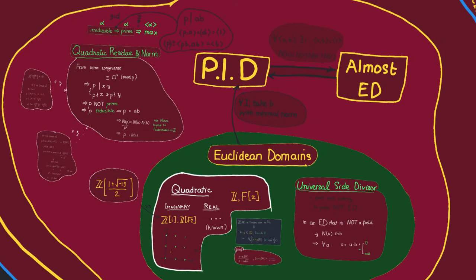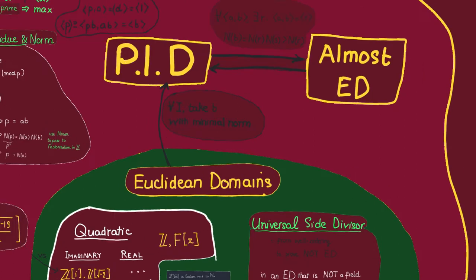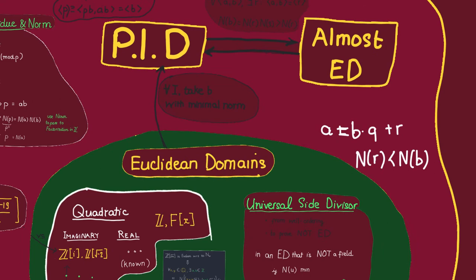How do we get PIDs? One source comes from Euclidean domains — domains where we can recover the Euclidean algorithm and the division algorithm. For that, we need a notion of remainder. In ℤ, when we divide A by B we require the remainder to be less than B. But in a general domain we don't have an ordering, so to get a notion of remainder we pass through a Euclidean norm and require that the norm of the remainder is less than the norm of B.